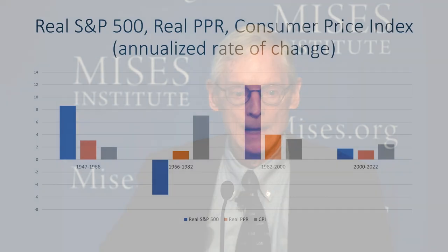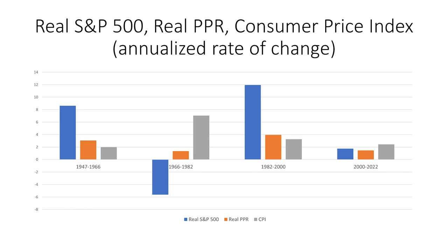Now let's add in the consumer price index. The gray represents the annualized rate of change of the CPI over these four time periods. You can see the very extreme price inflation rates of the 1970s — the first faltering of the dollar — where the annualized CPI change averaged around 7%. Yet even though growth rates are similarly low in the latest faltering of the dollar, the rate of change of the CPI is quite low, close to 2%, on target as the Fed would say. That is the main difference I want to call attention to.